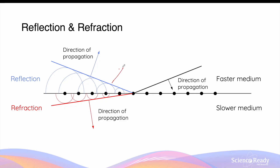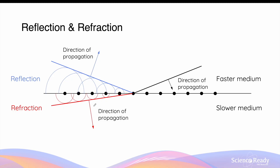The wavelets that travel back into the original medium will form the reflected wavefront, whose direction of propagation obeys the law of reflection. That is, if we draw a normal at a boundary, the angle that the reflected light makes with the normal, or the angle of reflection, should be equal to the angle of incidence. The wavelets that enter the new medium will travel at a different speed. For a medium with a higher refractive index, the wavelets will travel slower, causing the resultant wavefront to travel in a different direction compared to the original wave. In the slower medium, the direction of propagation of the new wavefront will be closer towards the normal compared to the direction of propagation of the original incident wavefront.